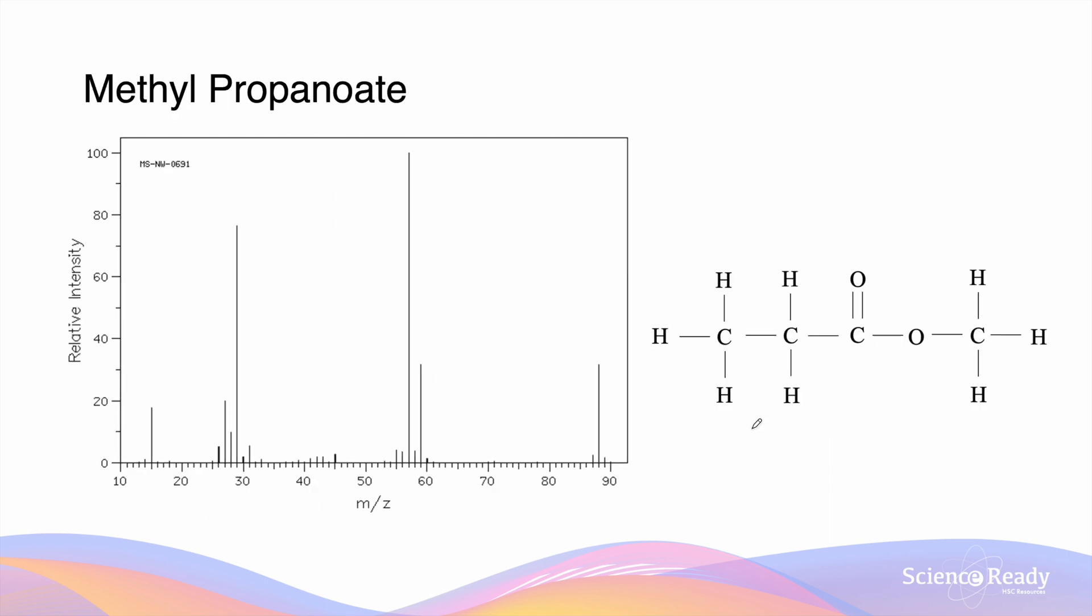Esters can produce a variety of signals, as they contain two oxygens, which are electron withdrawing. We similarly see cleavage next to the oxygen atoms in the alcohols for the same reason. If the bond between the alcohol section, which is this section here, and the carboxylic acid section, which is over here, of the ester is cleaved, we'll see ion peaks for this methyl group, CH3O, and also this propanoyl group, C3H5O. These molar masses are equal to 31 and 57.